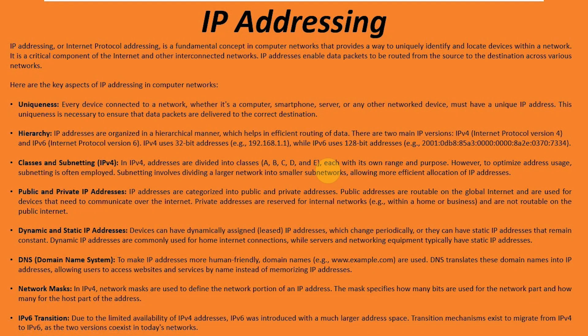DNS makes IP addresses human friendly — so when you type in google.com, it knows how to translate it to Google's IP addresses, so you don't have to type an IP address into your web browser. Then we have network masks, which relate to subnetting. Those define the network portion of the IP address and the host portion — the mask specifies how many bits are used for the network part and how many are used for the host part.